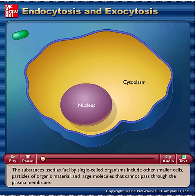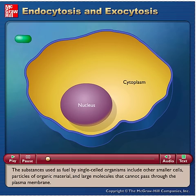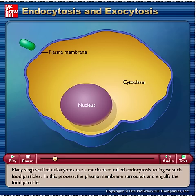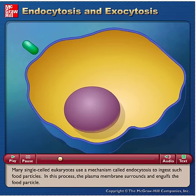The substances used as fuel by single-celled organisms include other smaller cells, particles of organic material, and large molecules that cannot pass through the plasma membrane. Many single-celled eukaryotes use a mechanism called endocytosis to ingest such food particles.